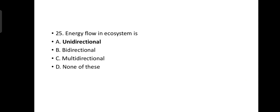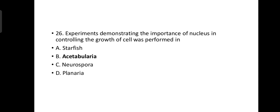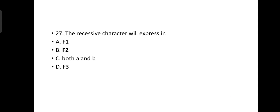Energy flow in ecosystem is unidirectional always. Experiments demonstrating the importance of nucleus in controlling the growth of cell was performed in Acetabularia. Acetabularia is the largest unicellular alga and that experiment was performed by Hammerling.